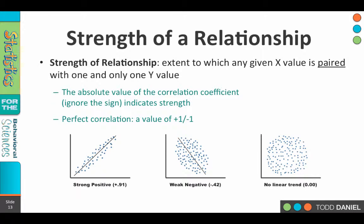In the lower left, we see a strong positive relationship. It's a positive 0.91, and you can see how closely those dots are to the line. In the middle, we see a weak, it's probably more of a moderate relationship, at a negative 0.42, and you can see the dots are more elliptical. They're more football-shaped. They're a little further from the line, not as close to the line.